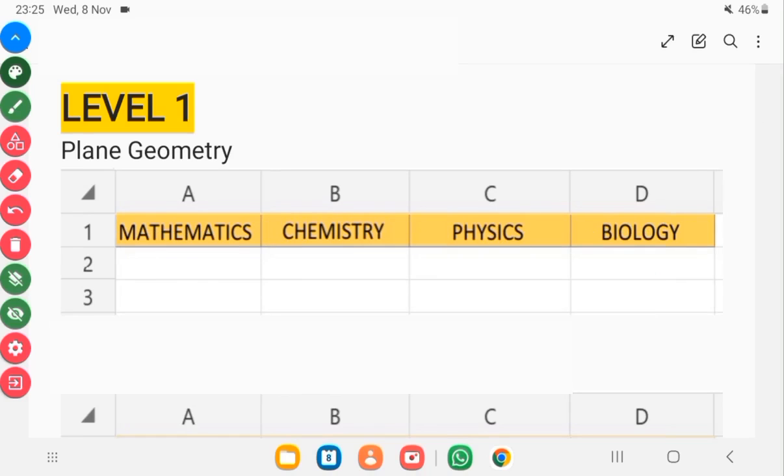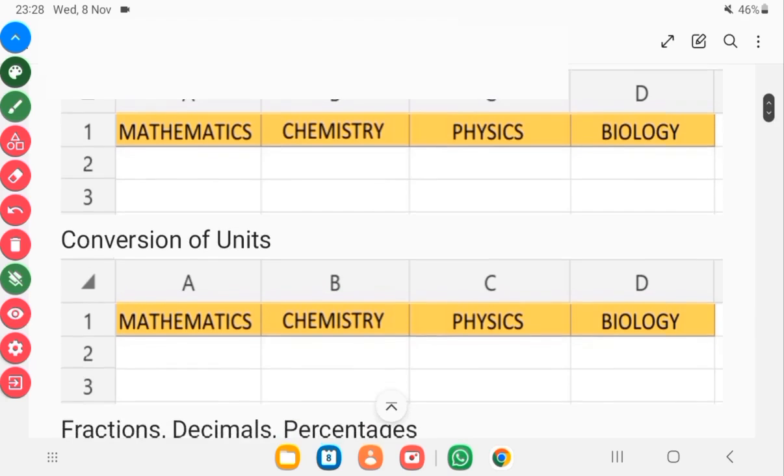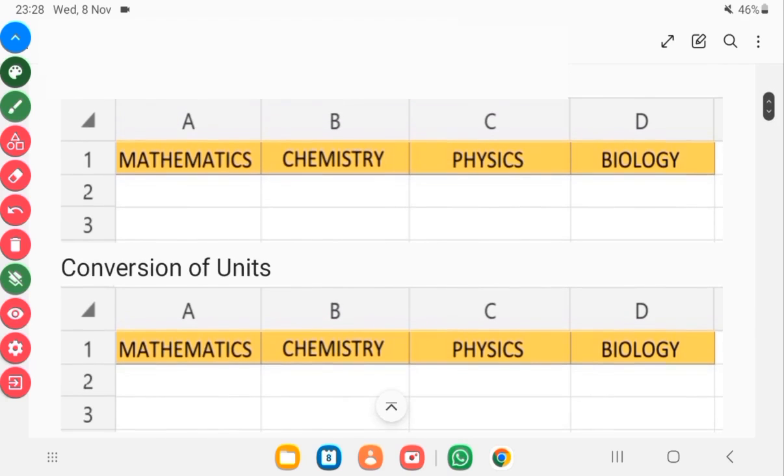Looking at the next one, conversion of units. Now conversion of units you need in mathematics, you also need it in physics, and a little bit of chemistry as well. In fact, you need it in chemistry because of one concept which I will talk about. Conversion of units includes distance, time, and mass.